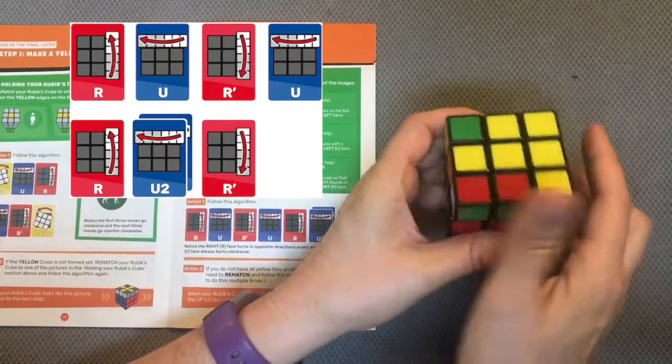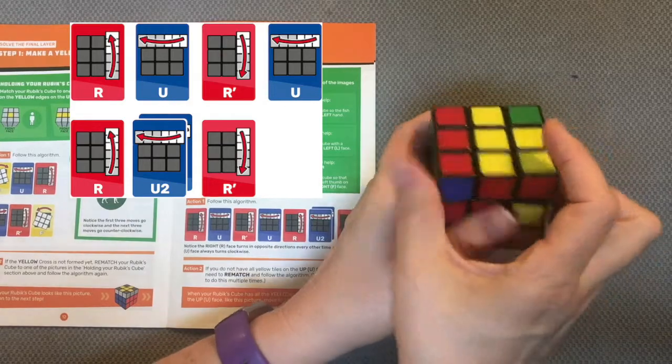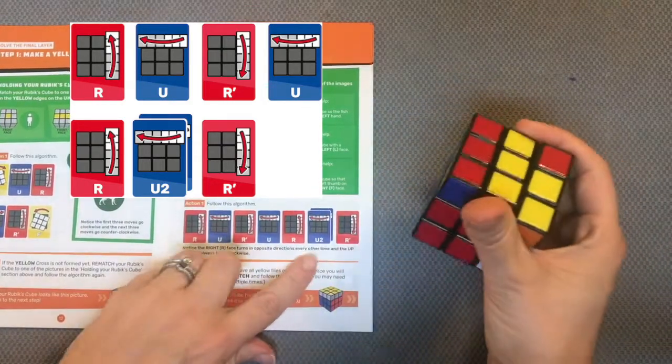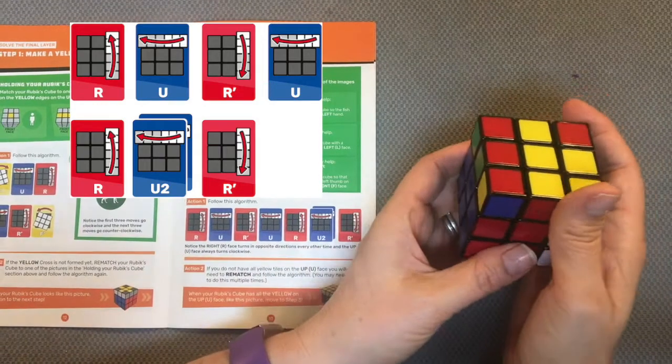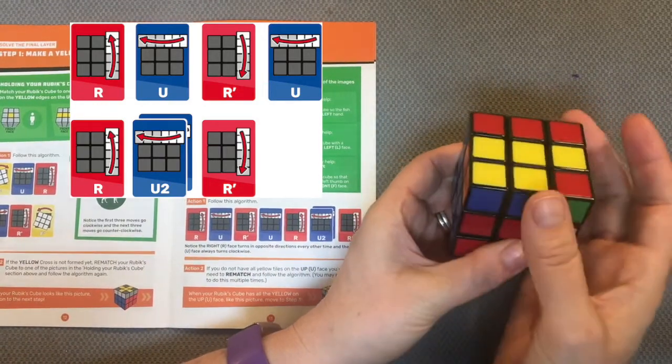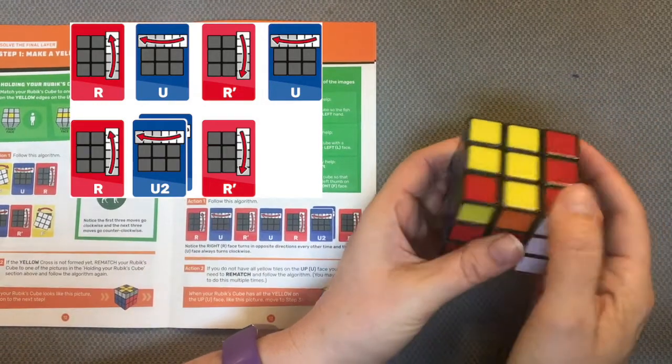Right away, up to the left, right towards me, up to the left, right away. Whenever I see a two, it means I have to run that specific move twice. So up to the left once, up to the left twice, and right away.